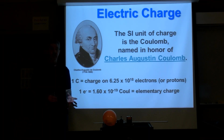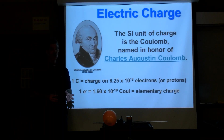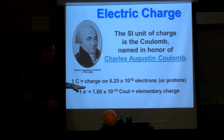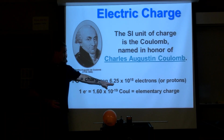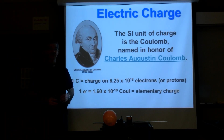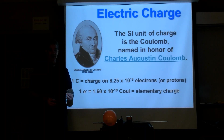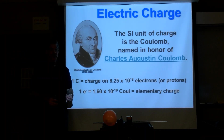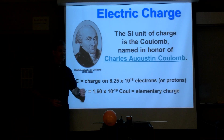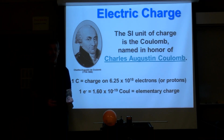The coulomb of charge is the total amount of charge of a whole bunch of electrons put together. One coulomb of charge is the charge on 6.25 times 10 to the 18th electrons if it's a negative coulomb of charge, or the charge on 6.25 times 10 to the 18th protons if it's a positive coulomb of charge.